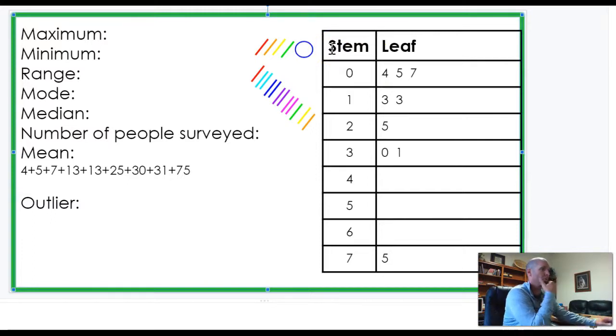And remember from the video we previously watched, that this row right here actually is three different numbers. The tens place is a zero, this is the ones place of a four, so that's a four. Here's a five, and here's a seven. So that's the way you think about those.